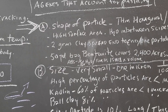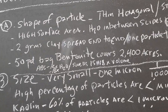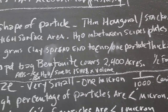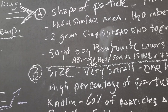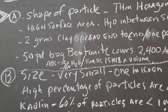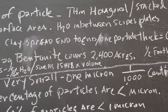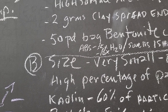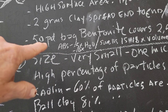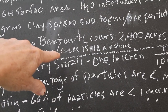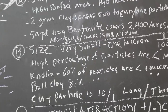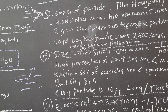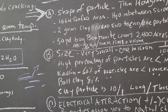The clay particle is very small — two grams spread end to end one particle thick would cover six thousand square feet. A 50-pound bag of bentonite — a type of clay — can cover 2,400 acres. Bentonite is highly plastic, absorbs five to ten times its weight in water, and can swell 15 to 18 times its volume. A good way to see this: put some bentonite in a cup, add water, come back the next day and you'll be amazed at how much water it absorbs. It's one of our most plastic materials.